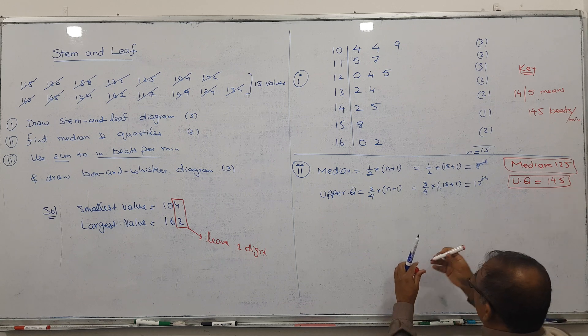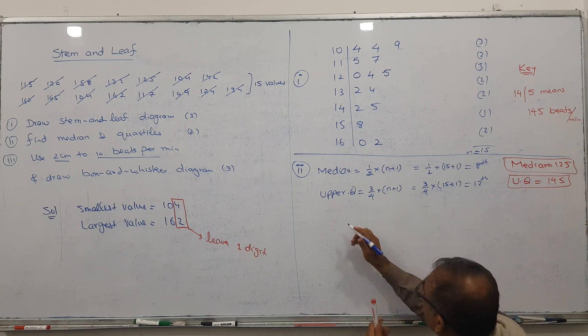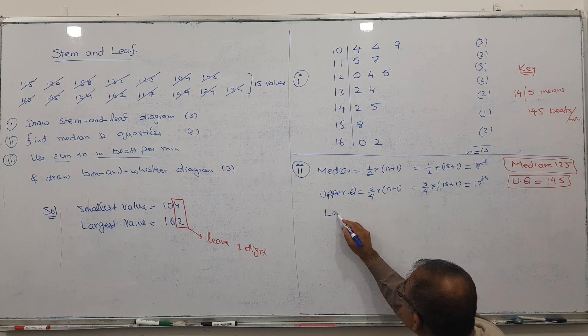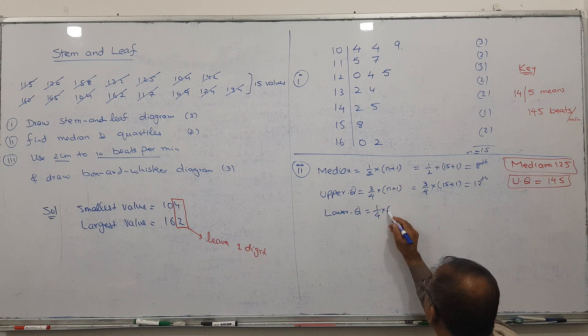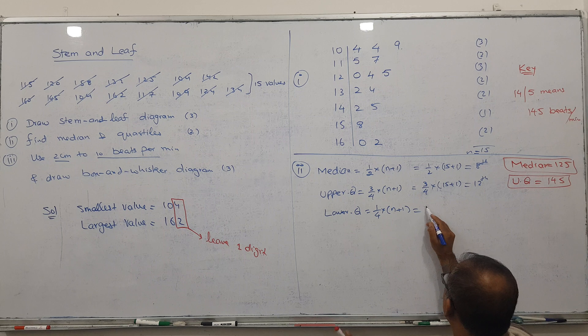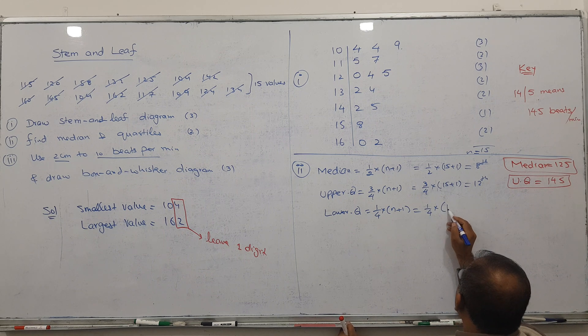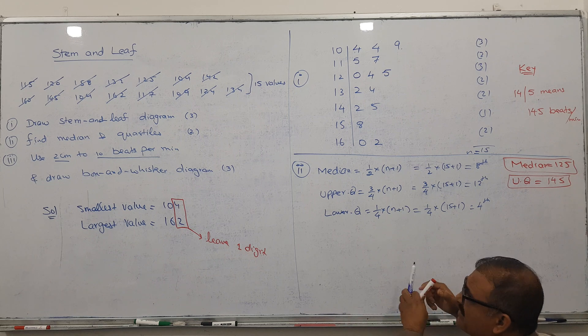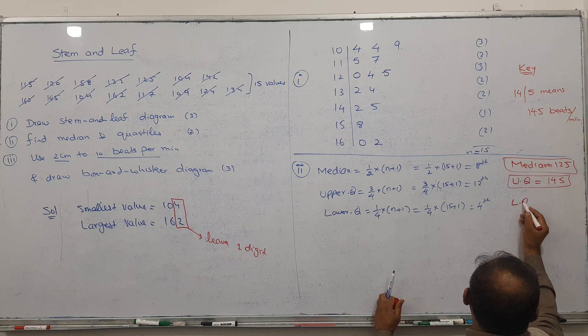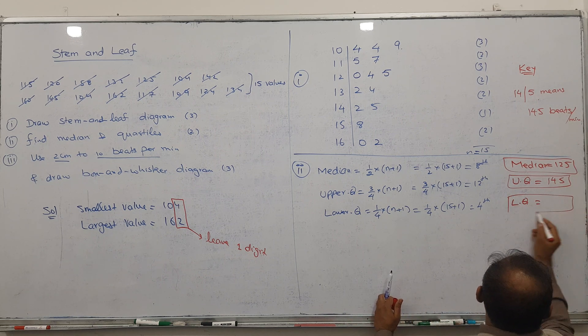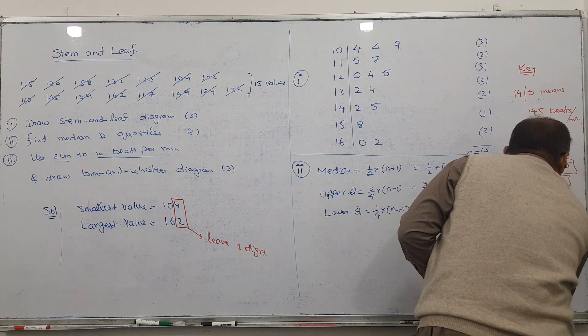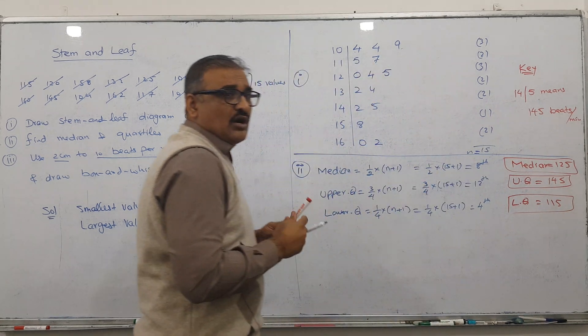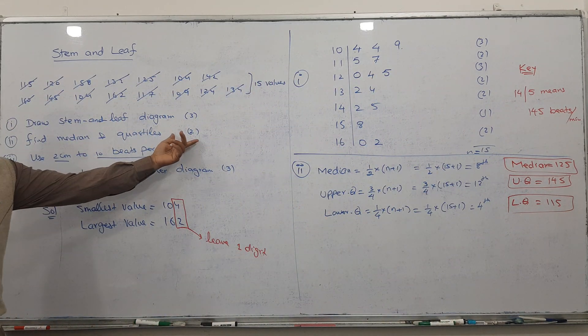Let's talk about the lower quartile. Lower quartile is 1/4 of n plus one. So 1/4 times 15 plus 1, I got the 4th term. So the 4th term is my answer. Let's see, lower quartile: 1, 2, 3, 4. So 115 is my lower quartile. Up till now you got these two marks.